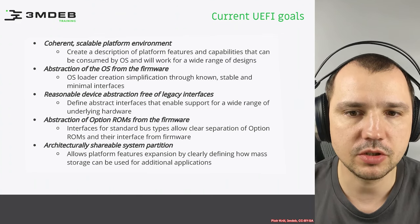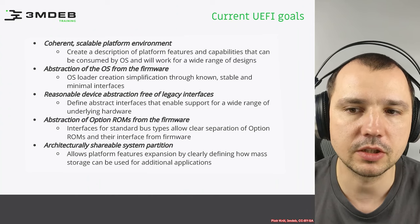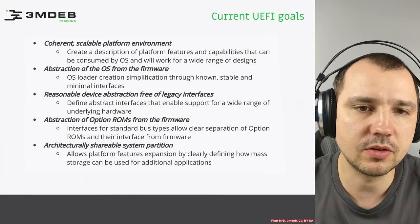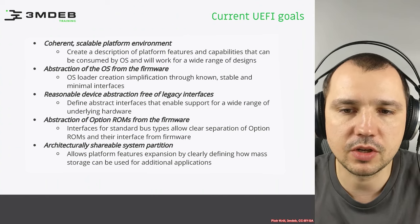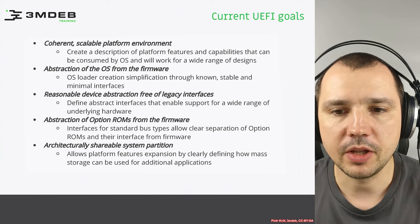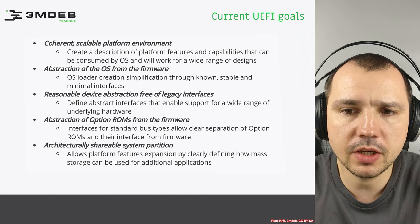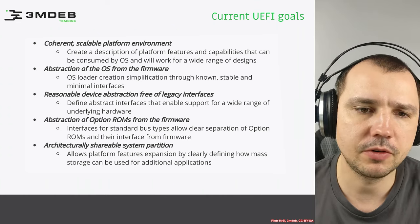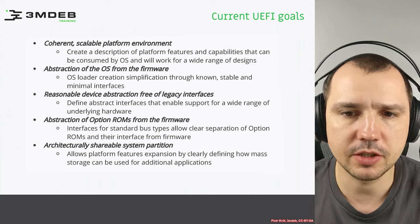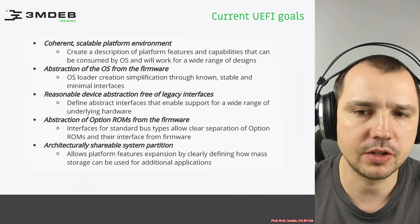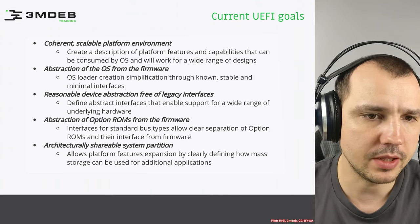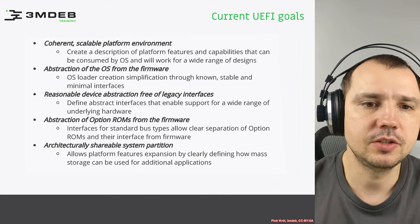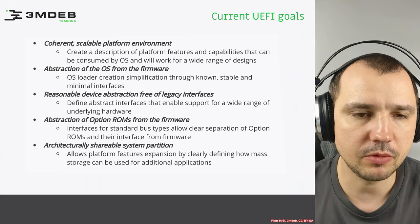The last goal — an architecturally defined system partition — led to the creation of an additional partition to hold software that can be used by firmware. This creates a space on the hard disk that is not as constrained as SPI flash. This partition can deliver software consumed by firmware, and we typically use it for the bootloader, operating system kernel, RAM disk, and various other shareable binaries. It can also be used for firmware updates.